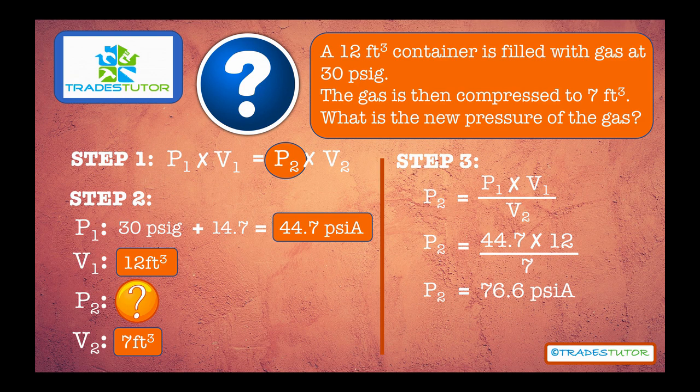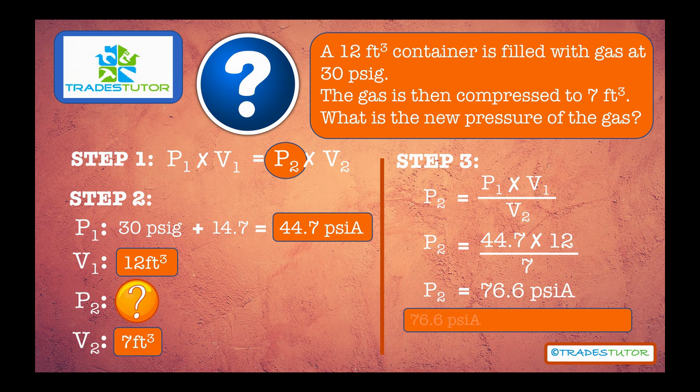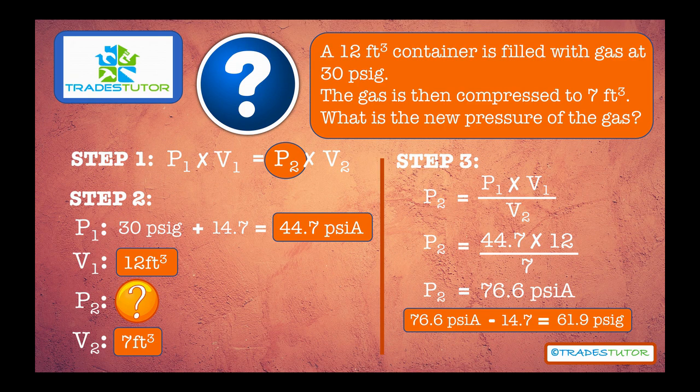Now, you might say, wait a minute. What is it in gauge pressure? How do I get it back to gauge pressure? Well, you just do this. You take your absolute. And remember, in the beginning, we added the 14.7. Just minus 14.7. And there's your gauge, 61.9. That's all it is to this. It's straightforward if you follow those three steps. You can never get this wrong.